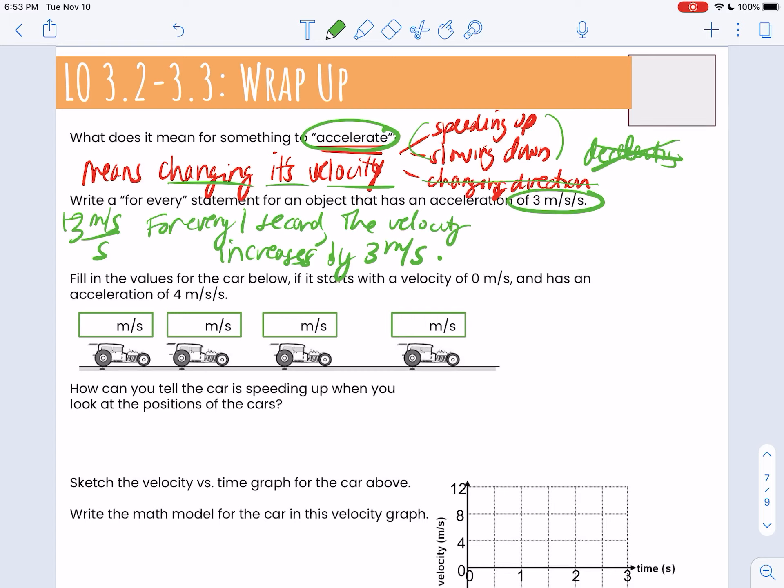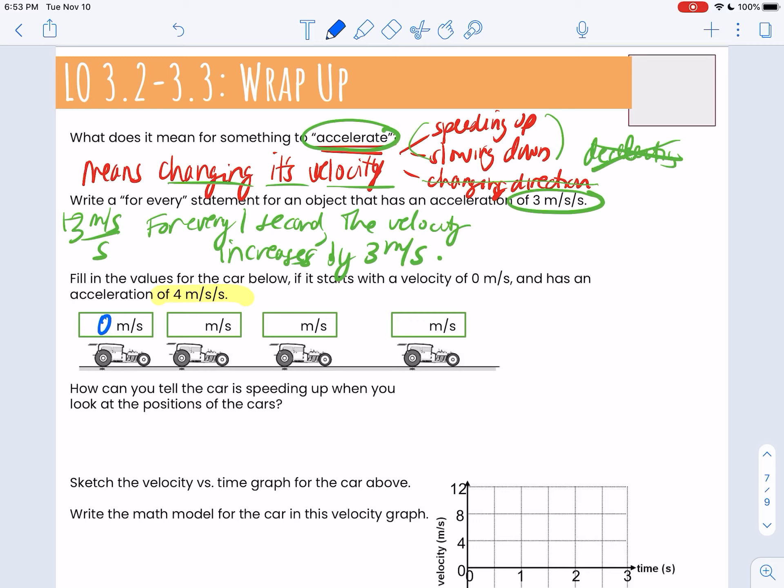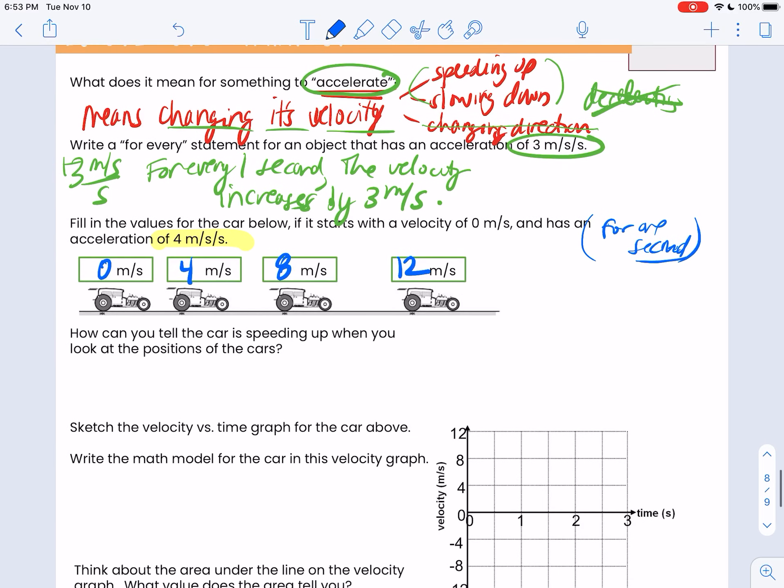So as an example, here's an acceleration of 4 meters per second. Let's assume it starts at a velocity of 0. I'll use another color for that. 0. 1 second later - I should have put 1 second. These cars are 1 second apart. It's going to go 4 meters per second. Another second later, it's going to go 8 meters per second. And then another second later, it's going to go 12 meters per second.